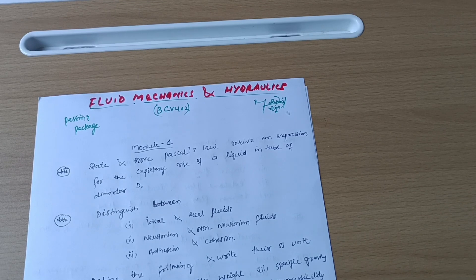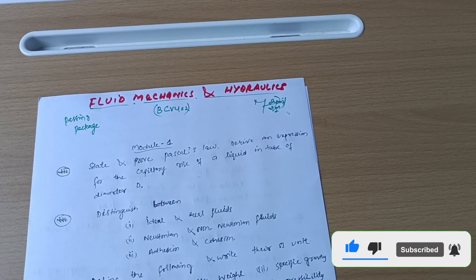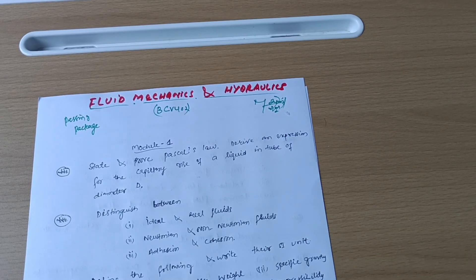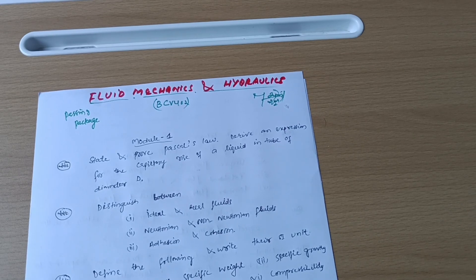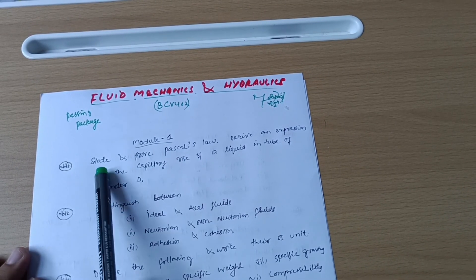So this is BCV402, the subject code. Let me discuss here super important questions which will appear in the VTU examinations. So let us start here model-wise. From Model 1, you have to cover at least five questions.